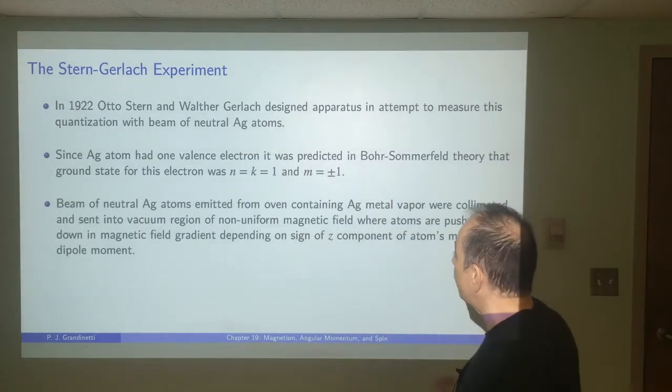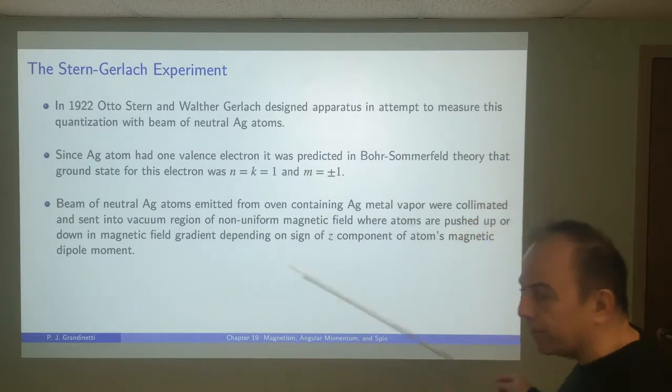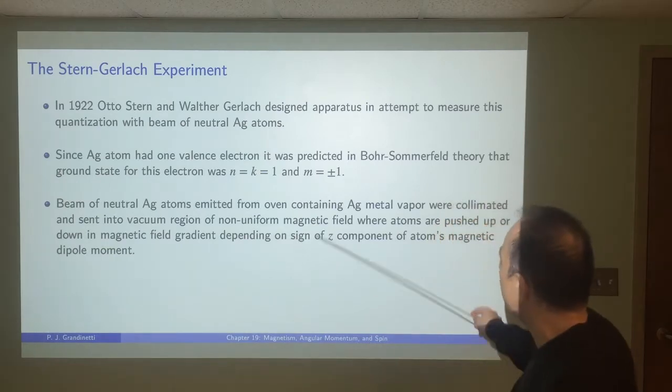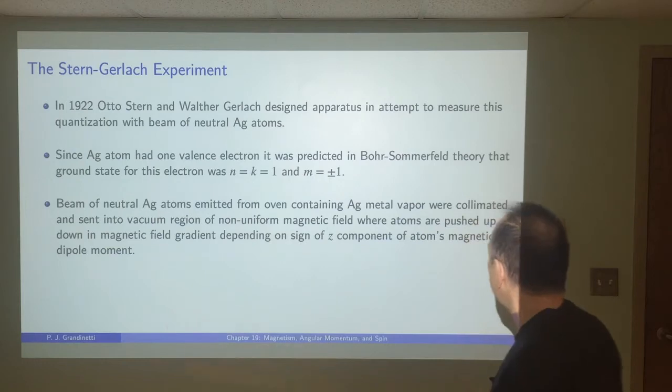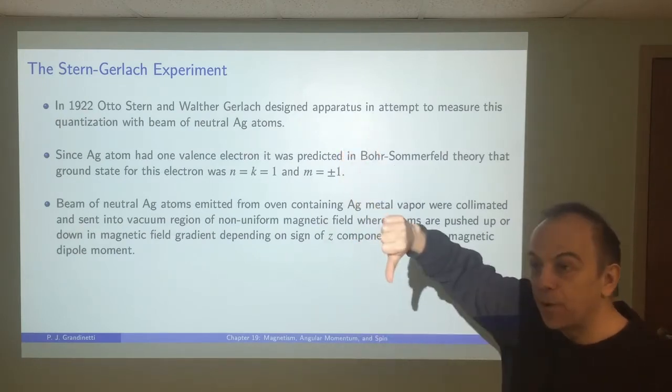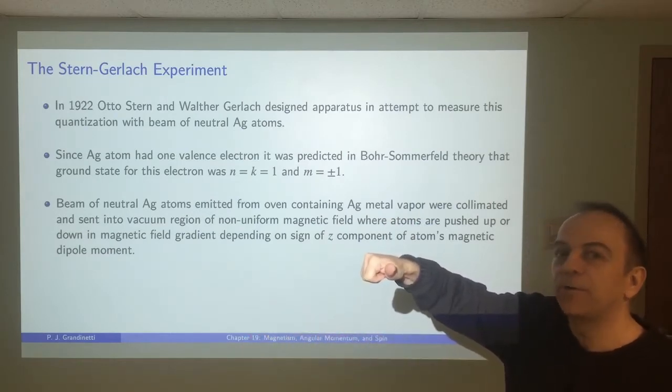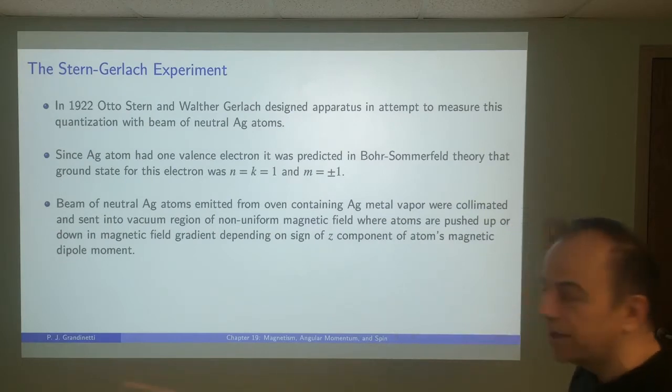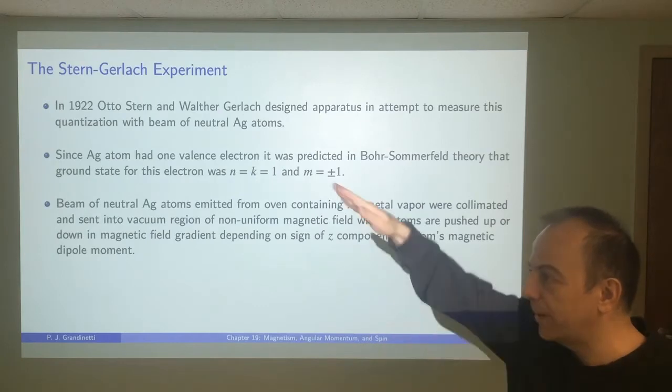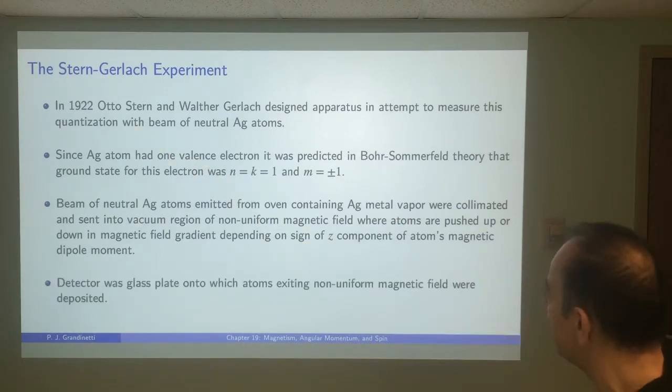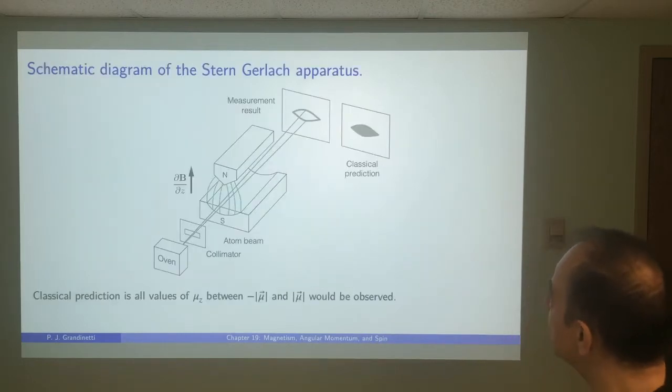So in 1922, Stern and Gerlach set out to try to prove this idea based on Sommerfeld's model, the Bohr-Sommerfeld theory. They were looking at silver atoms and they knew that silver had one valence electron. This theory predicted that the ground state for this valence electron was N equals 1, K equals 1, and had an M value of plus or minus 1. Remember, in the Bohr-Sommerfeld model, M equals 0 is not allowed. So they did an experiment where they took a beam of silver atoms that were neutral.